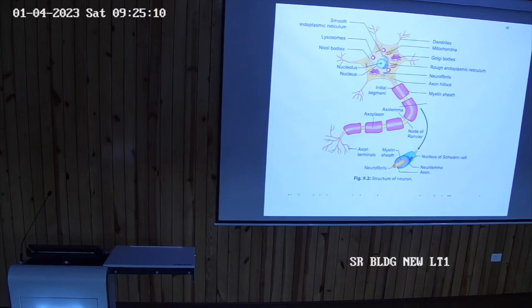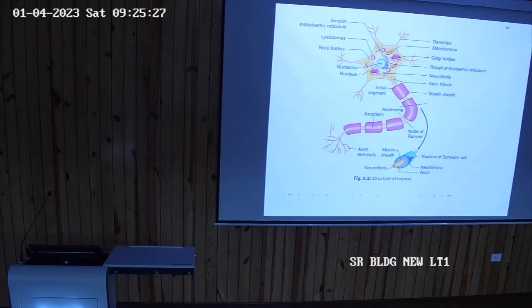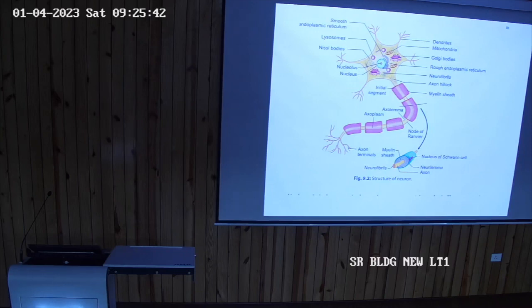The neurolemmal sheath provides the capacity for regeneration. If the nerve is injured in the peripheral part, it will regenerate. But if it is damaged in the brain or spinal cord, there is no regeneration — because there is no neurolemmal covering of the nerve fibers in the central nervous system. It is present only in the peripheral nervous system.